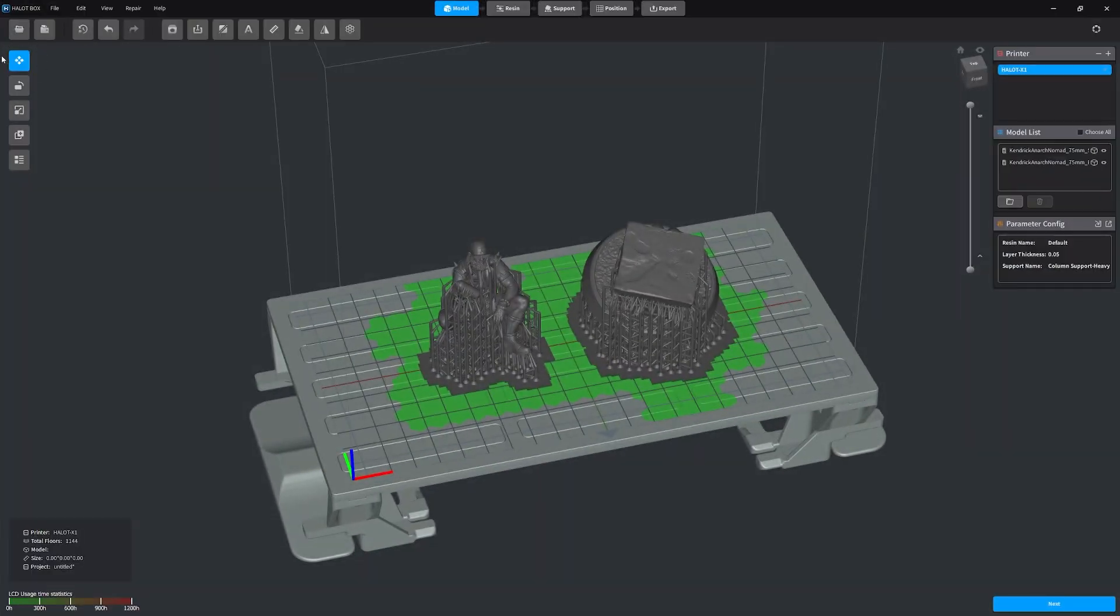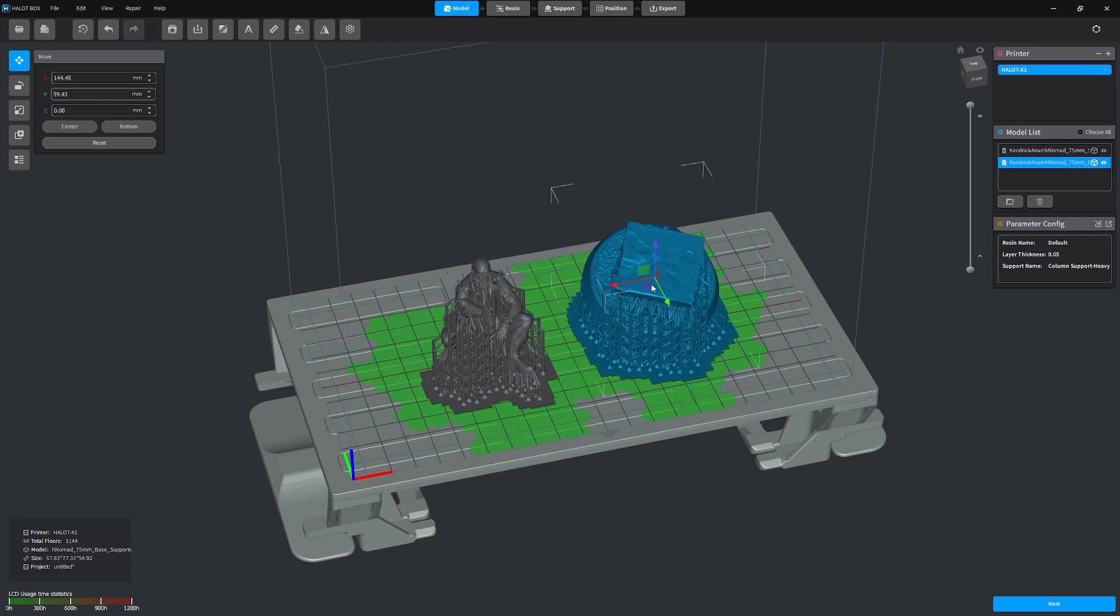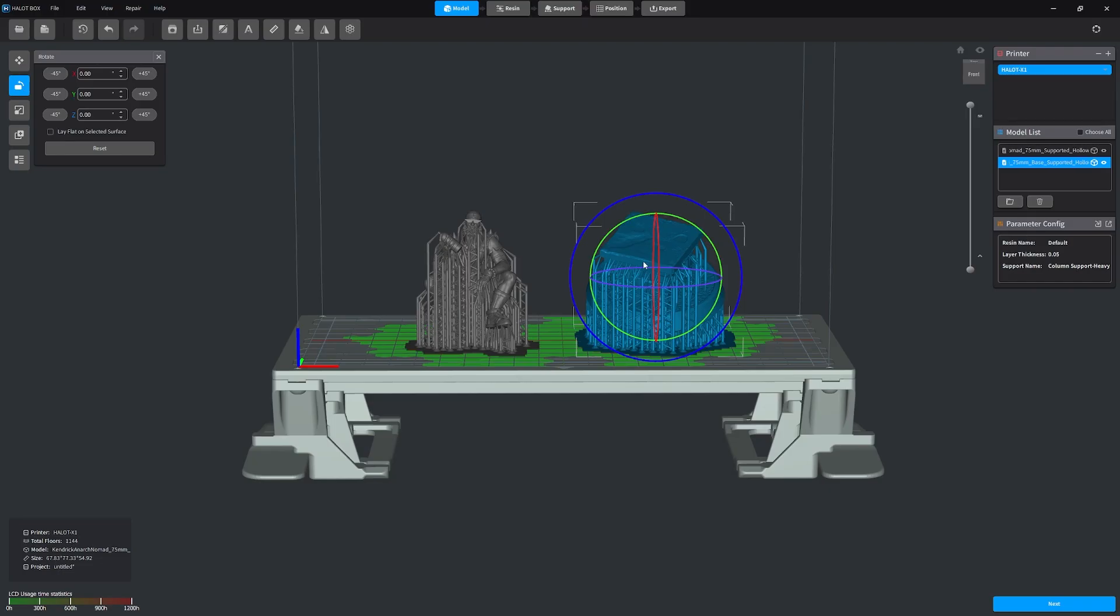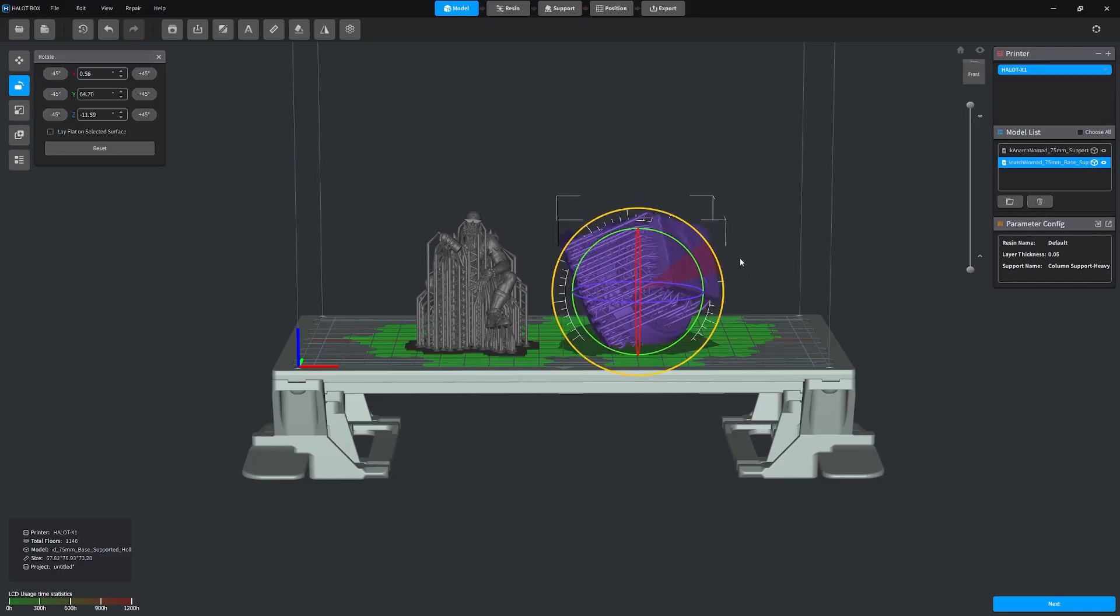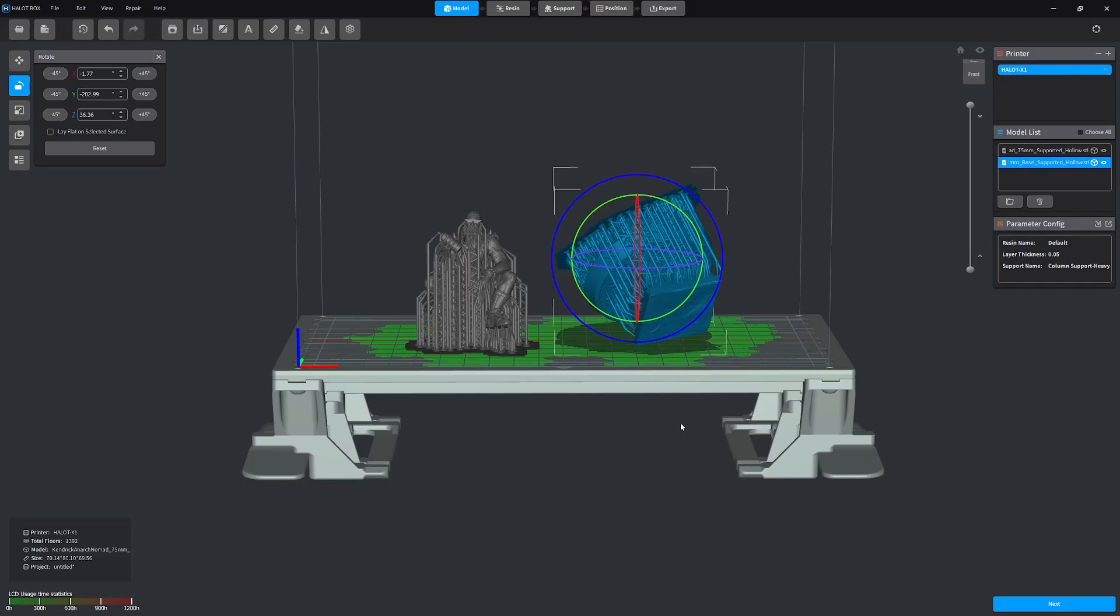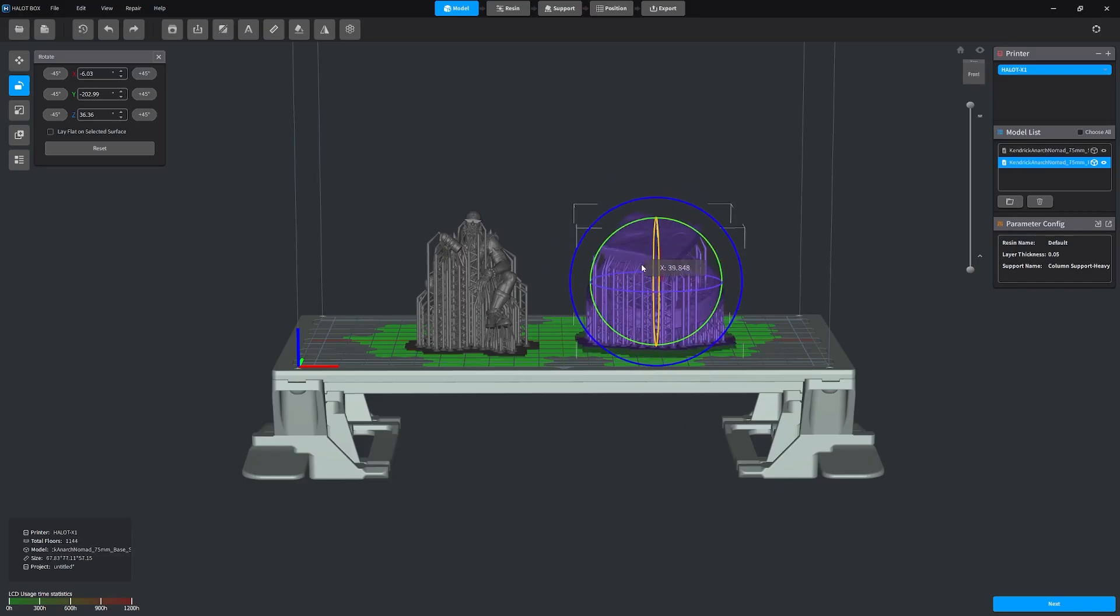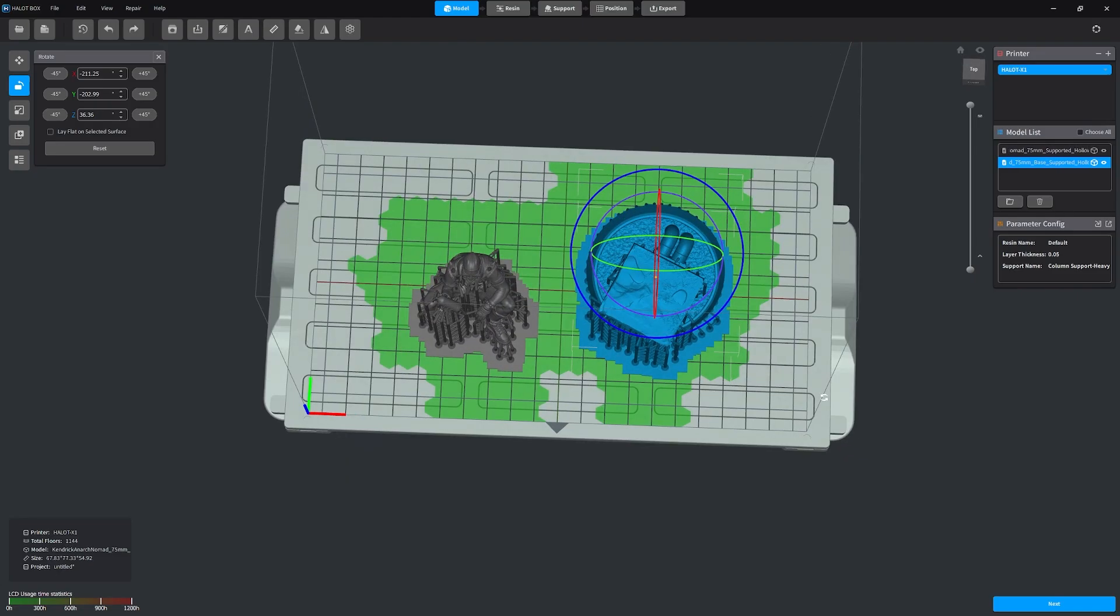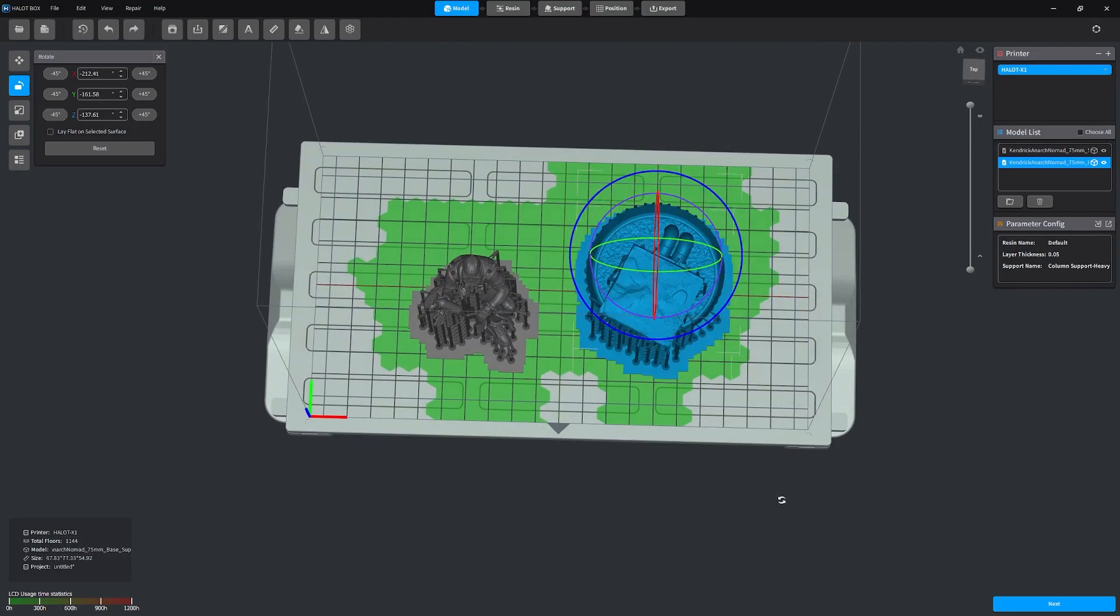So I decided to up the ante on my next print. I'm using a model from Lute and this is one of their figures which was pre-supported. Halot Box has the same features as any slicer. You can twist and turn, enlarge, shrink as well as move the items around the plate. The interface of this software is very intuitive and really quick to pick up.